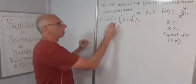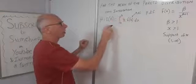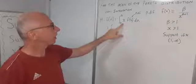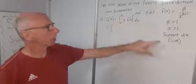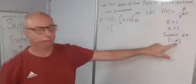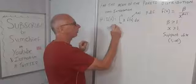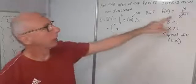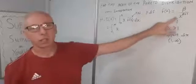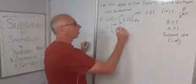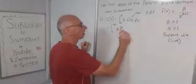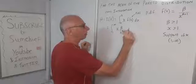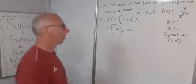Now we plug in our values. The limits a to b become 1 to infinity. Then x is our random variable, and for f(x) we plug in our Pareto PDF: β divided by x to the power of β plus 1. Don't forget the dx.